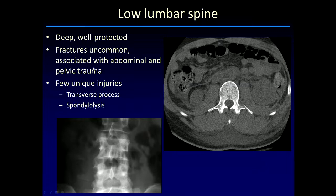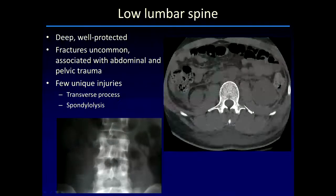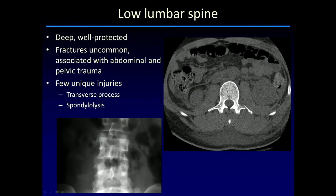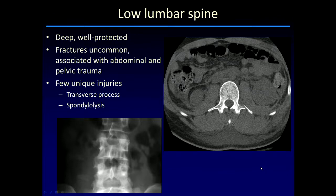The low lumbar region is not commonly injured — it's very deep and well protected by overlying muscle. We see the same types of injuries as at the thoracolumbar junction but with decreased frequency. Fractures of the transverse processes in isolation without vertebral body fractures are seen in the lower lumbar spine. These fractures are not particularly significant in terms of mechanical or neurologic stability, but they may be associated with important visceral trauma — particularly to the genitourinary system — and occasionally with significant hemorrhage, particularly in anticoagulated patients involving the paraspinal musculature or adjacent psoas muscle.